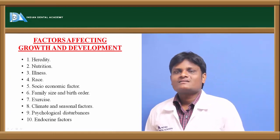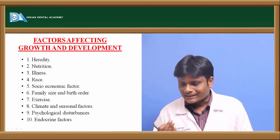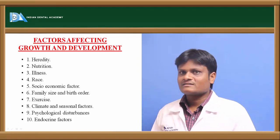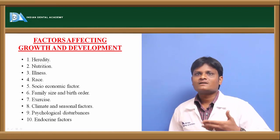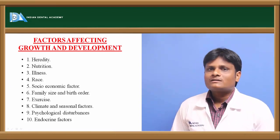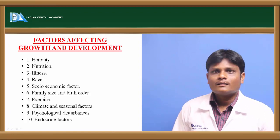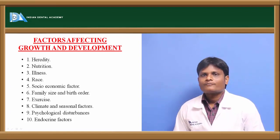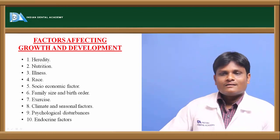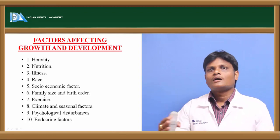Factors affecting the growth of an individual include heredity, nutrition, climatic conditions, illnesses, family size and birth order, and socio-economic status. Regarding heredity, growth is contributed partly by genetics and partly by the environment — it is a multifactorial effect. That is why the features of offspring often simulate one of the family members from either the paternal or maternal side.